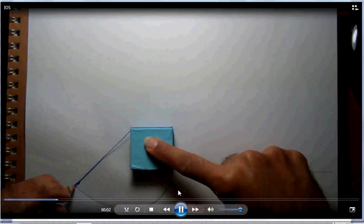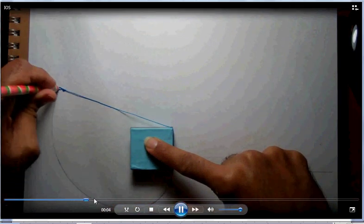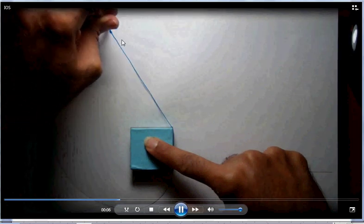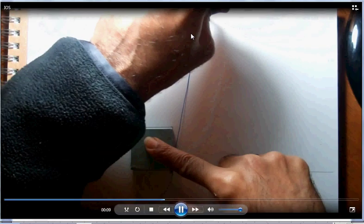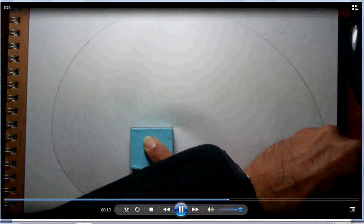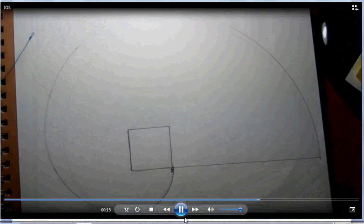The involute of a square is the path that the end of this string will make while I'm unwinding it. That's the involute of a square. Let me complete it and pause here.